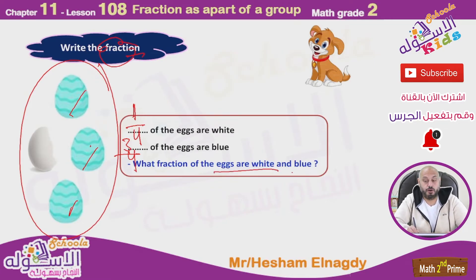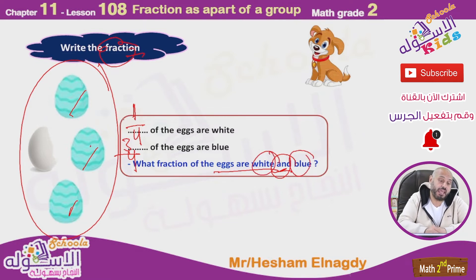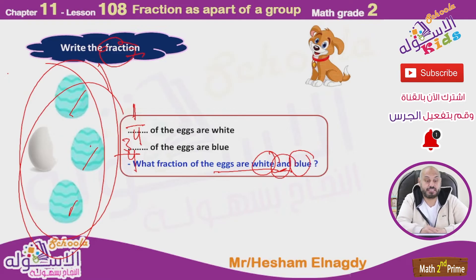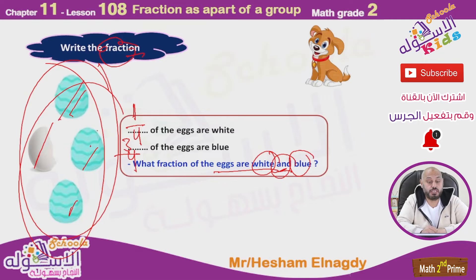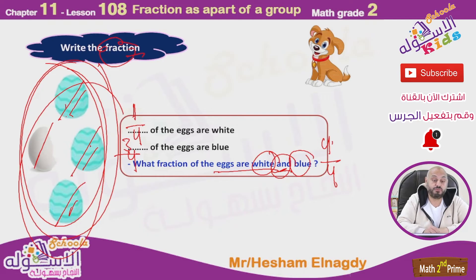What fraction of the eggs are white and blue? We learned before that the word 'and' means plus. So blue and white together: one, two, three, four — four from four, four over four, four-fourths.